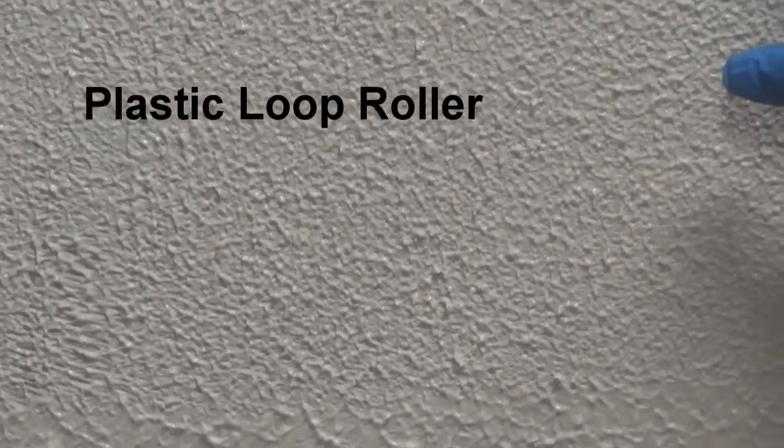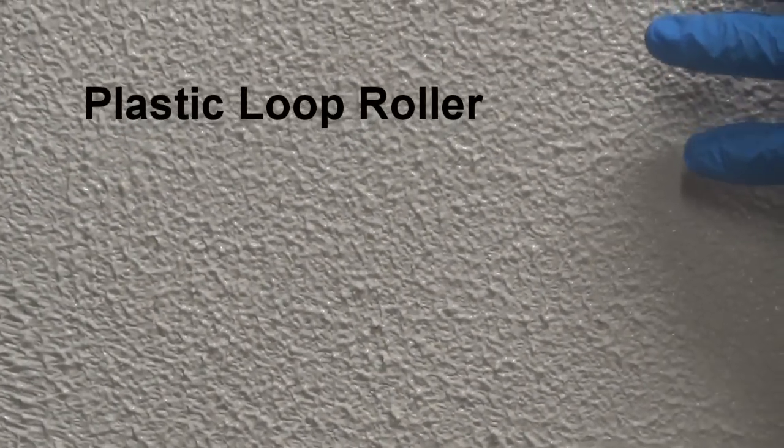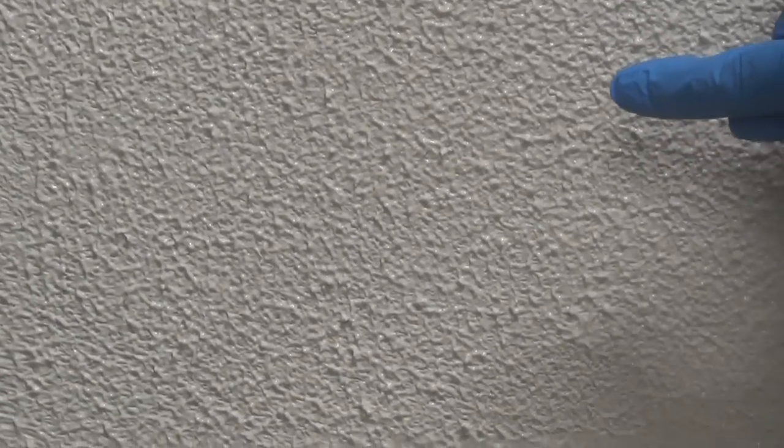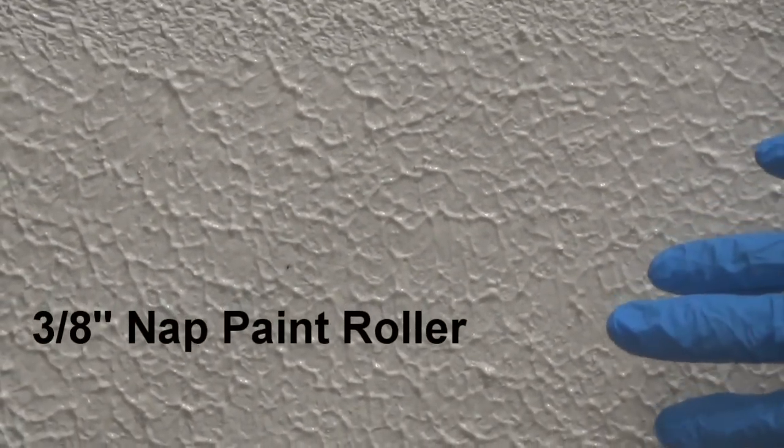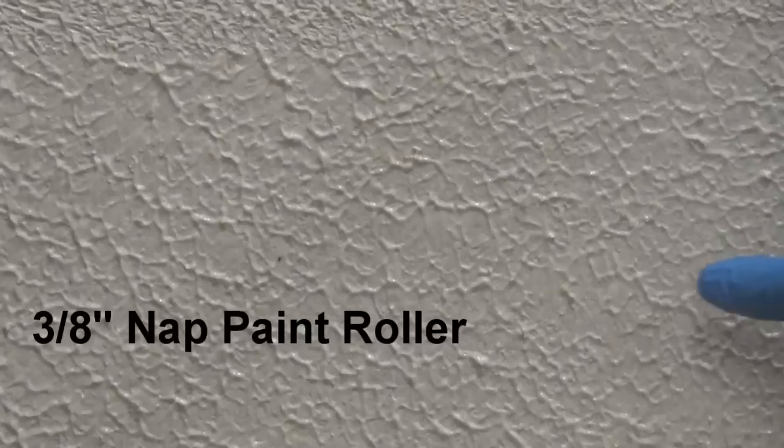So right here we have the texture that was applied with the plastic loop roller, and now we'll just go below down here and here's the texture that was applied with just a common paint roller. Now I'm going to ask you, which texture do you prefer? Let me know in the comments below the video because I'd like to hear your opinion.